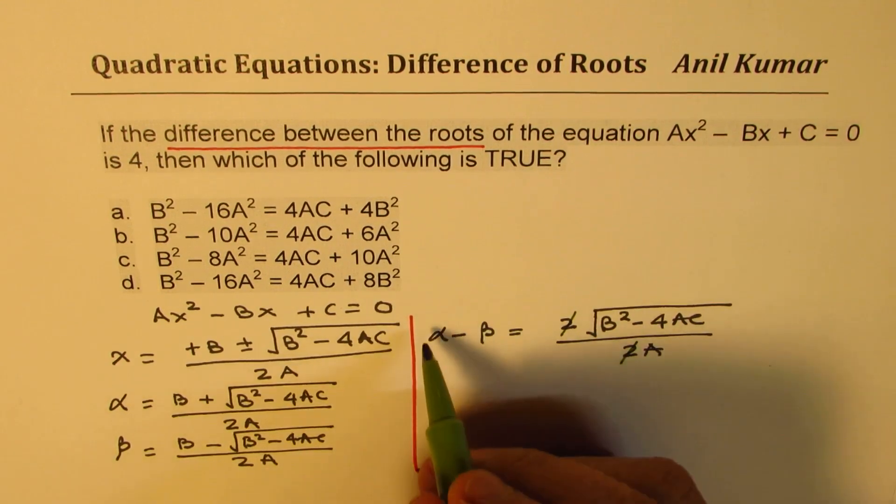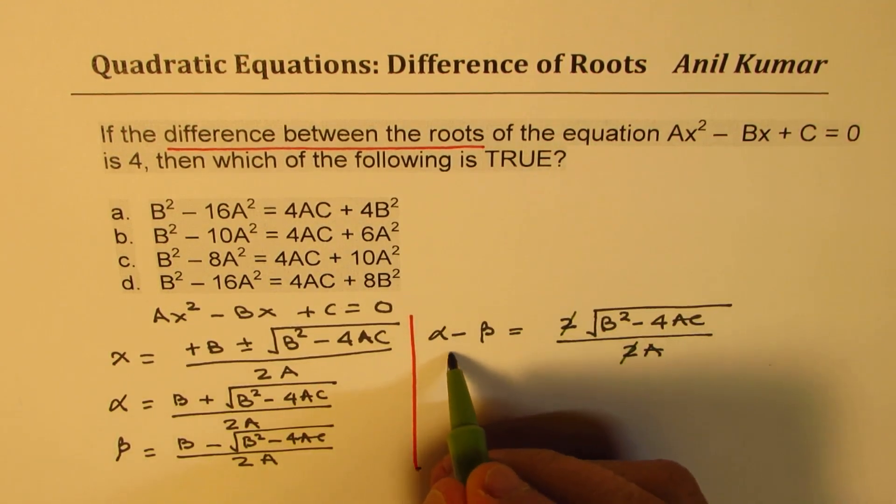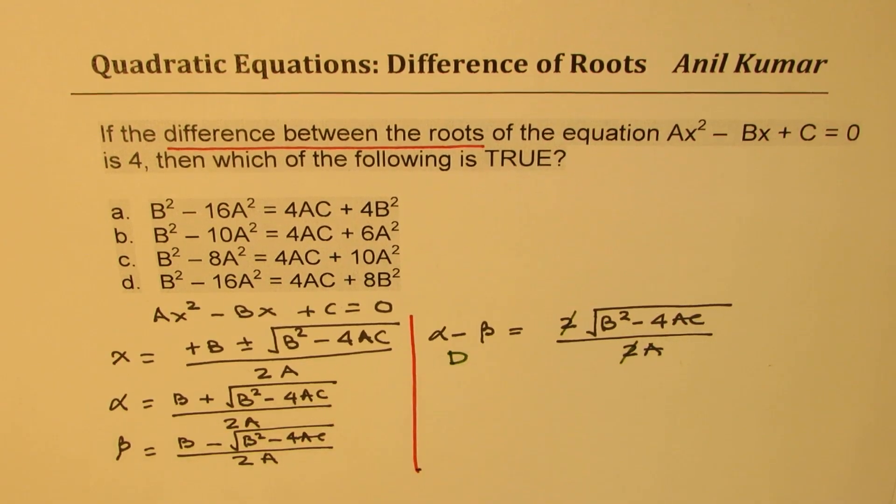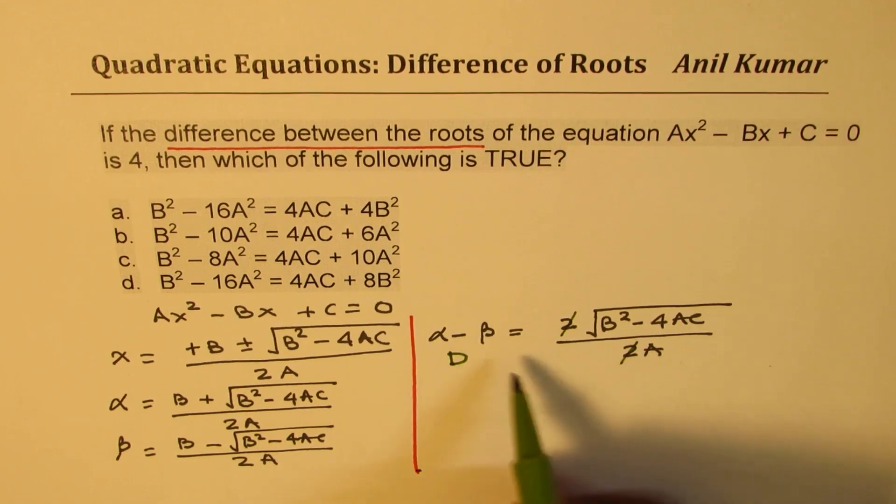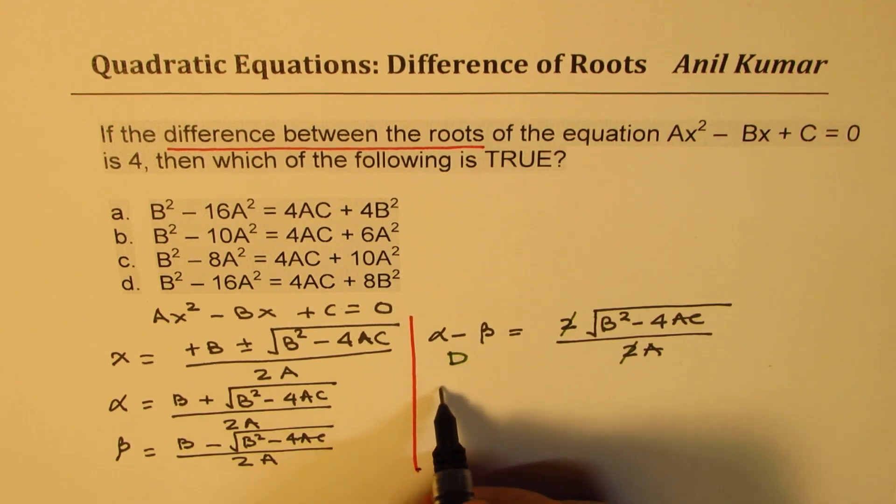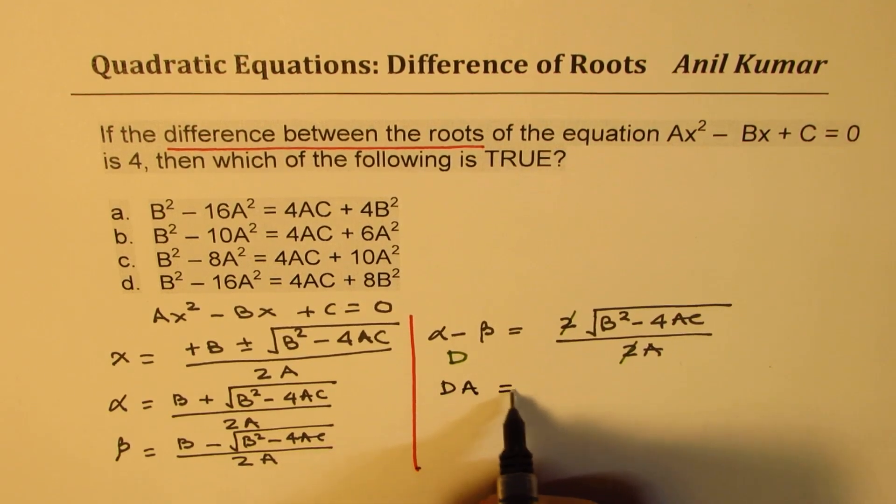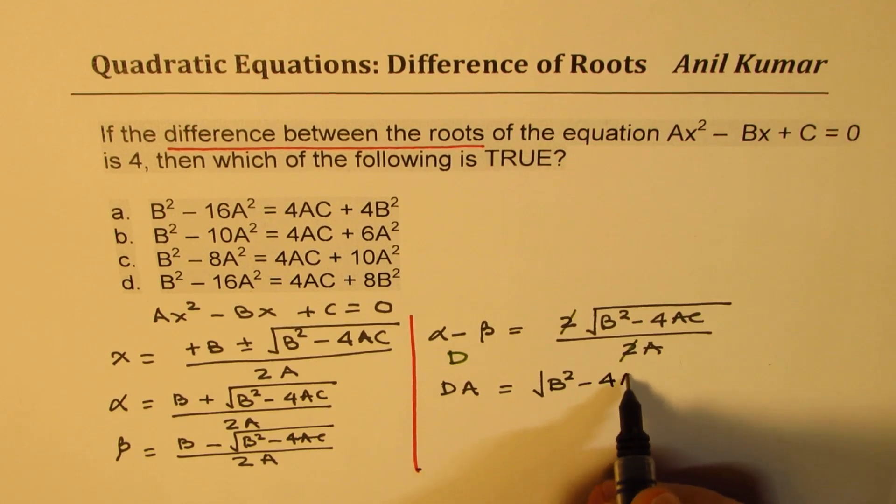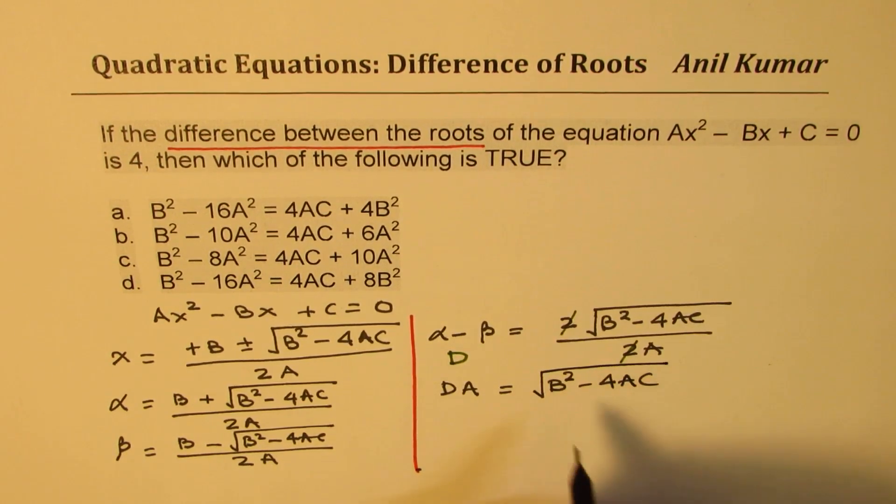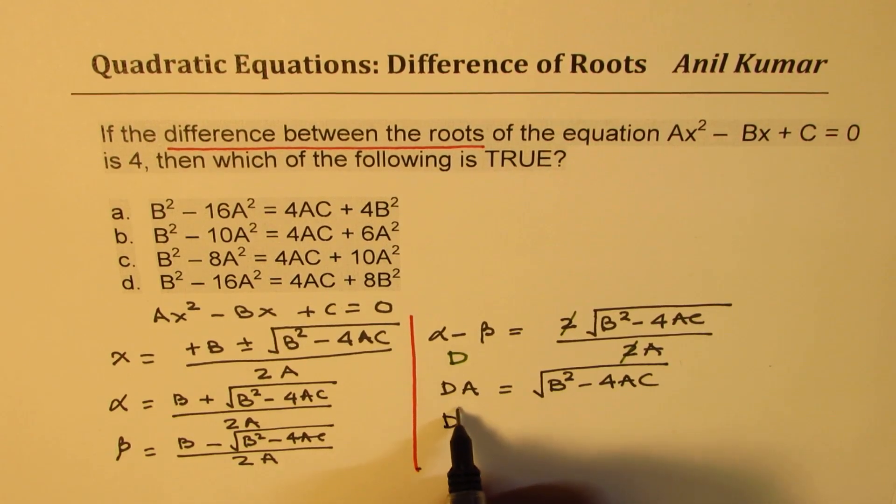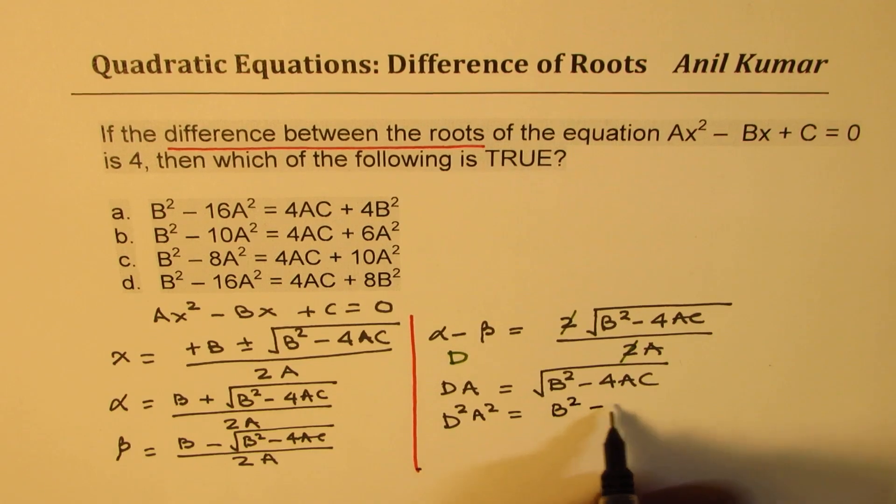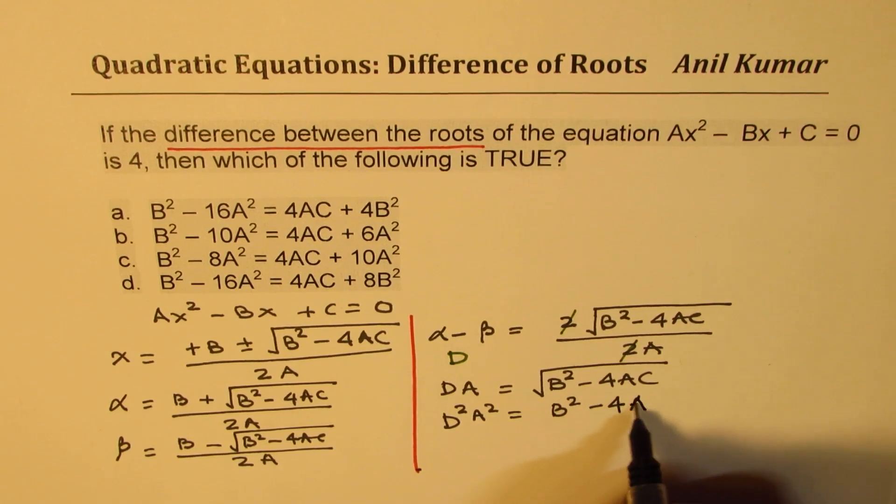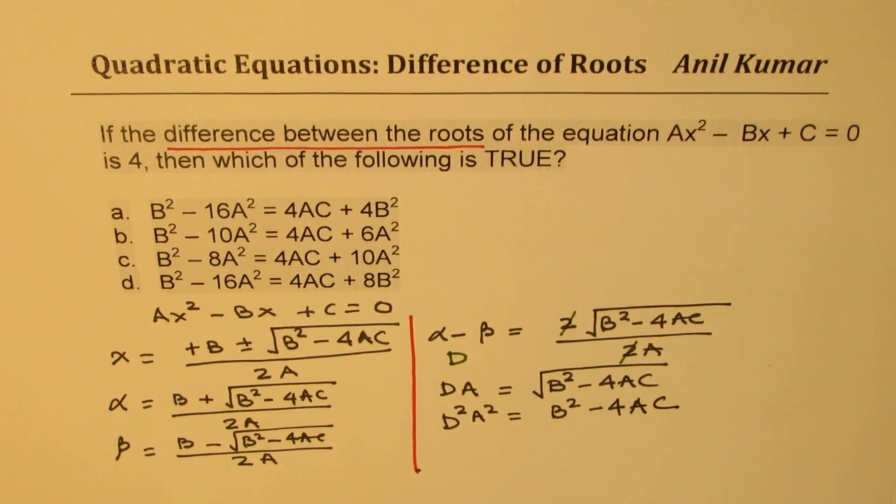Now if I call this difference d, we can cross multiply and say that d times a equals √(b² - 4ac). If I square both sides, I get d²a² = b² - 4ac.